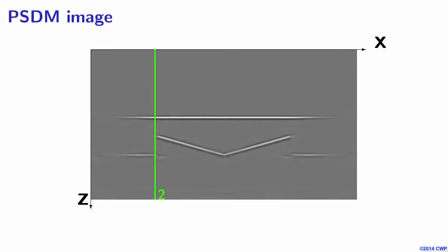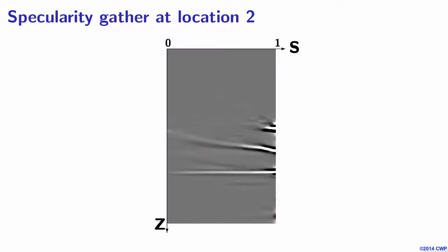In another example, if we consider image points at the sharp corners, what we should be expecting is from the shallower image point, the reflected energy can only be received. But for the other two image points, there should be some diffraction energy. Some of the energy is smeared for the lower value of specularity.